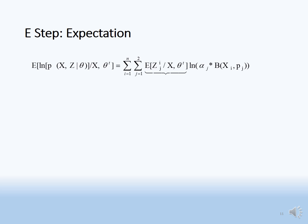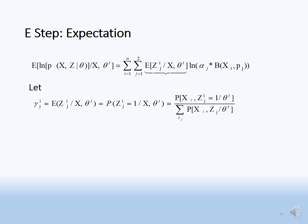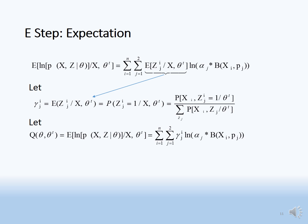E-step: we introduce a new variable gamma_ji equal to the expectation of z_ji given x and theta_t. The expectation of z_ji equals one times P(z_ji = 1) plus zero times P(z_ji = 0). We can calculate P(z_ji = 1 given x, theta) using Bayes' rule. We define function Q(theta, theta_t) by replacing the expectation with gamma_ji and substituting the Bernoulli expression.